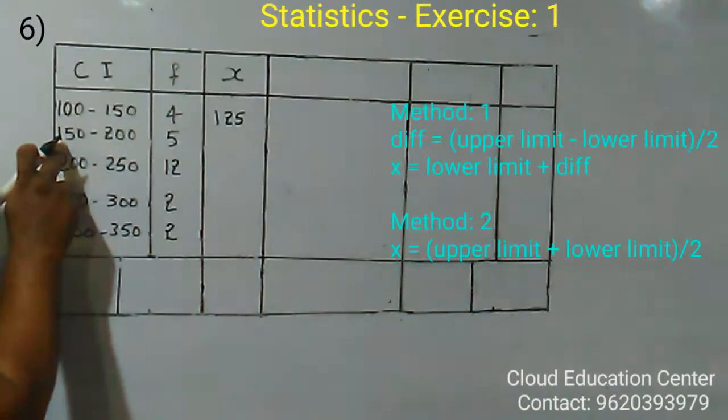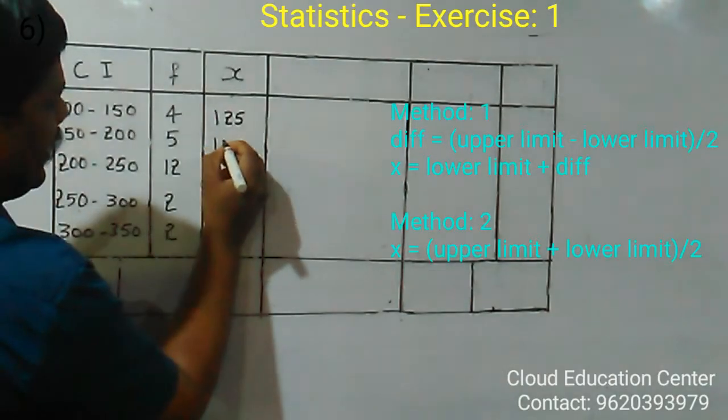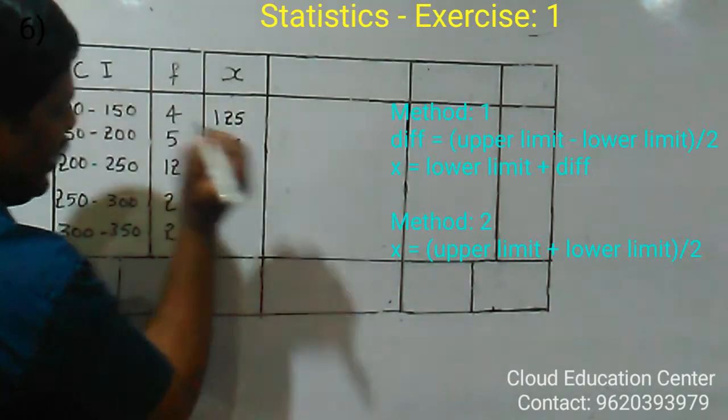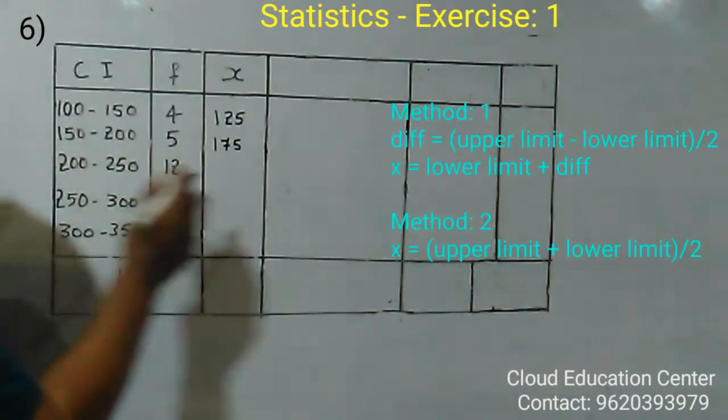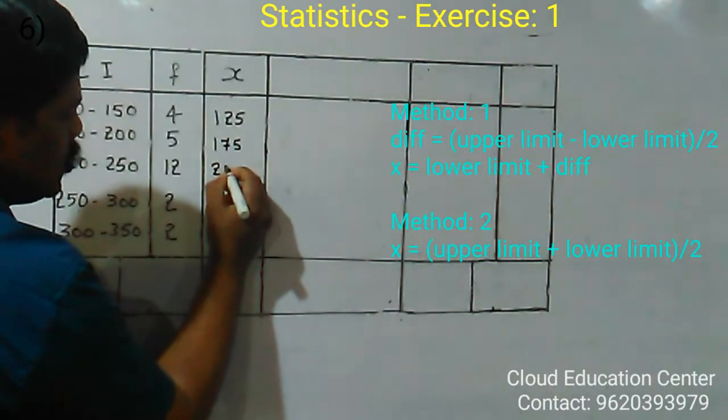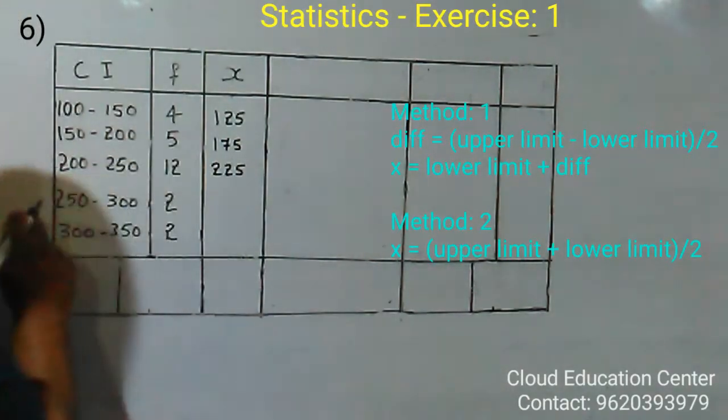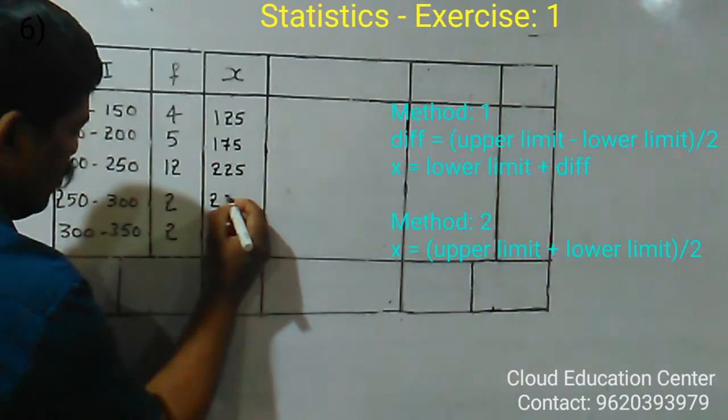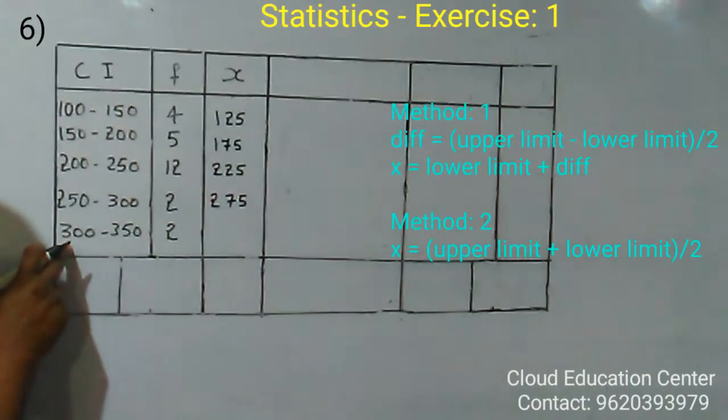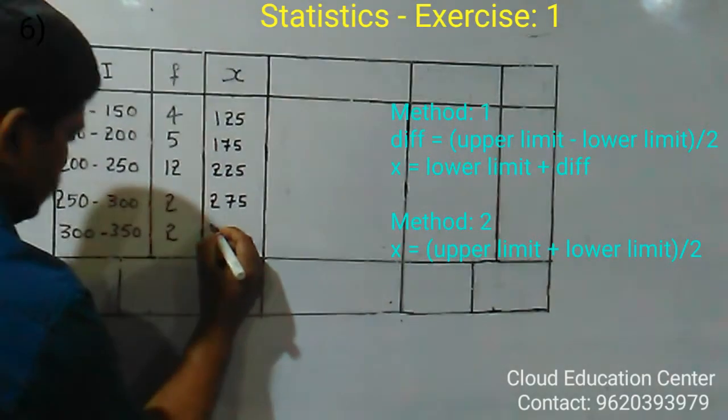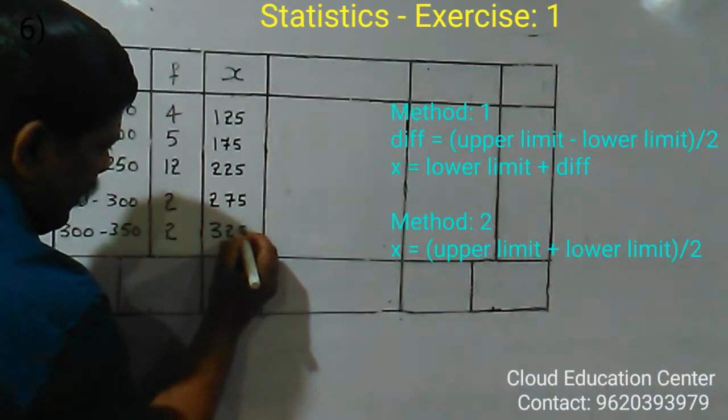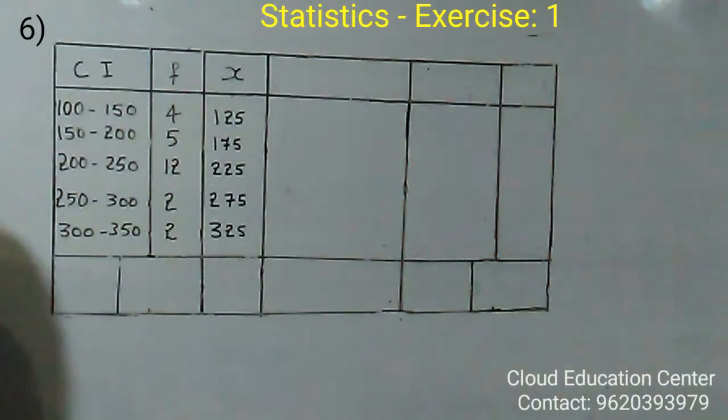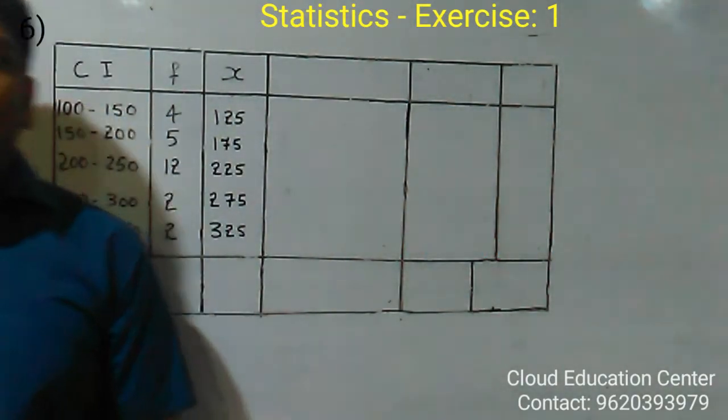And 150 plus 25 is 175. 200 plus 25 is 225. 250 plus 25 is 275. So we got the class mark or mid value.